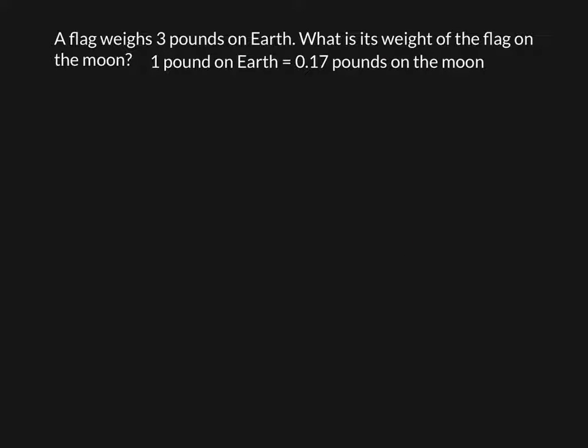A flag weighs 3 pounds on earth. What is the weight of the flag on the moon? If we know that 1 pound on earth equals 0.17 pounds on the moon, we'd want to multiply 0.17 times 3. We do it just like regular multiplying. 3 times 7 is 21. 3 times 1 is 3 plus 2 more is 5.